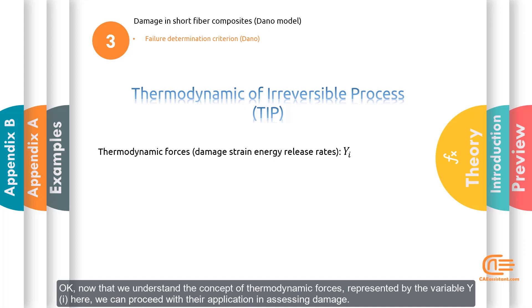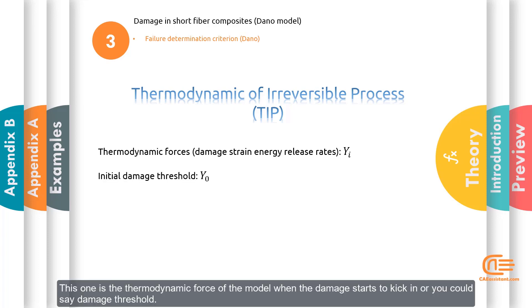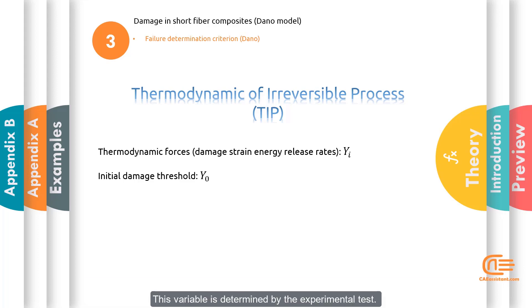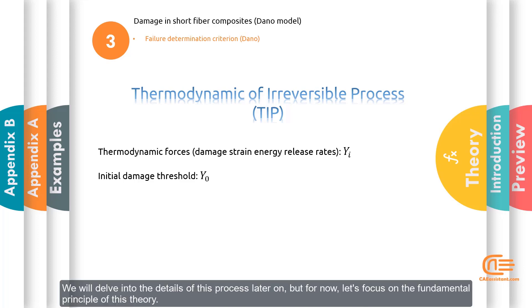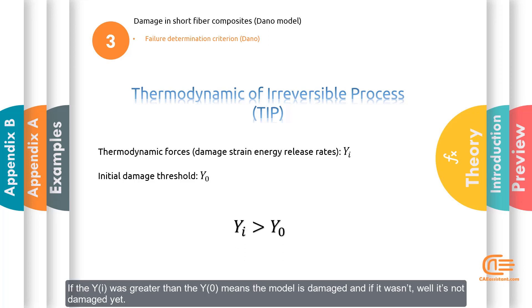In the thermodynamic framework, the evolution of damage is governed by the associated thermodynamic forces. But what are the thermodynamic forces? They are the strain energy release rates. Since we want to use them to evaluate the damage, we use the damage strain energy release rates obtained by taking the derivative of the damaged material strain energy formula with respect to the associated damage variables. Now that we understand the concept of thermodynamic forces represented by the variable yi, we can proceed with their application in assessing damage.